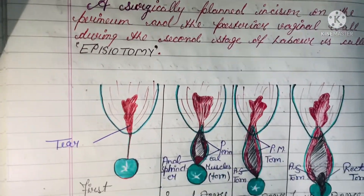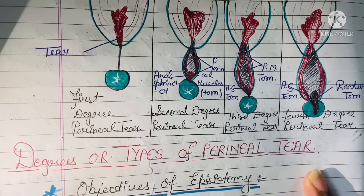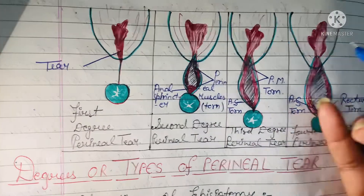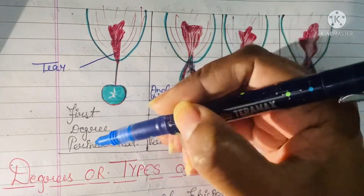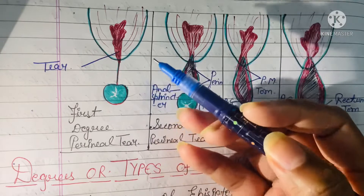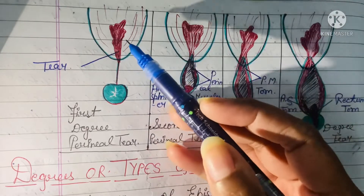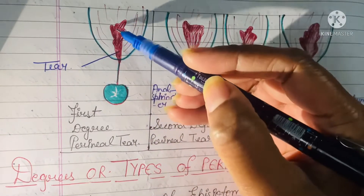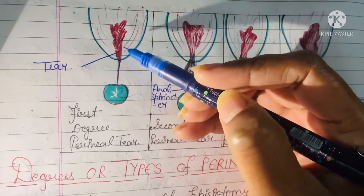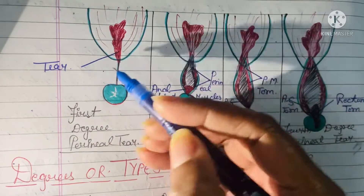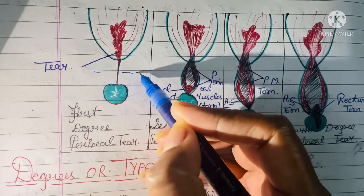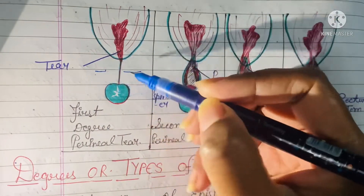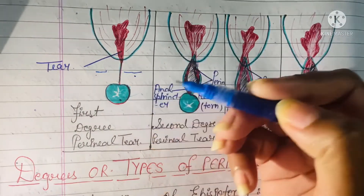I have drawn some diagrams here of the degrees, or we can say the types of perineal tear. As you can see, this is the vagina, this is the perineal wall or the posterior vaginal wall or the perineum, and this is the anus.